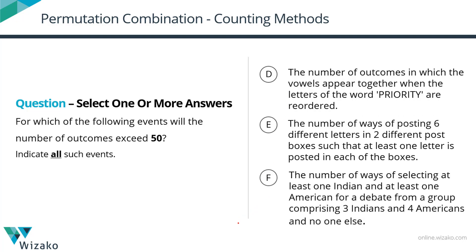We have a total of 6 events. The number of outcomes for any of these events, let's call it N. We need to find how many of these events have the number of outcomes exceeding 50 — so greater than 50, meaning 51, 52, 5 million, all of those are valid. If the number of outcomes is less than or equal to 50, those cases will not be counted. They said pick all such events, so anywhere from 1 to all 6 events could qualify. This question is time-consuming and difficult — there's absolutely no shortcut. You just have to find the number of outcomes for each option.